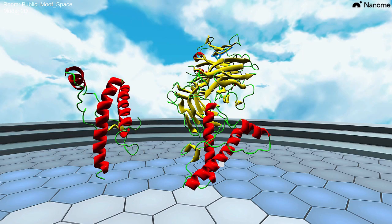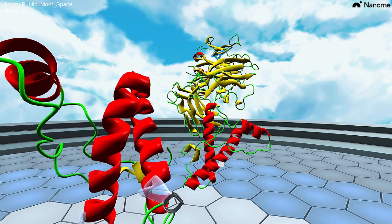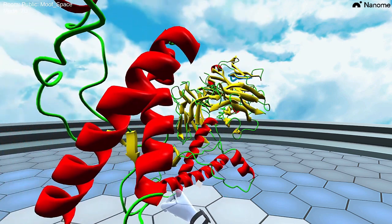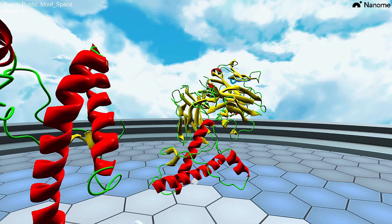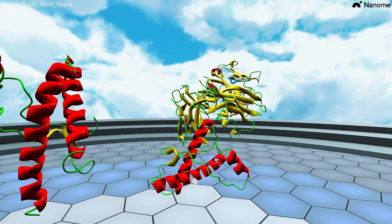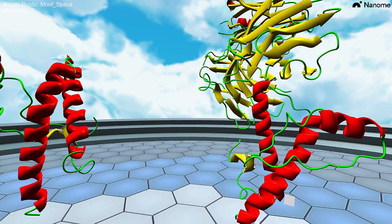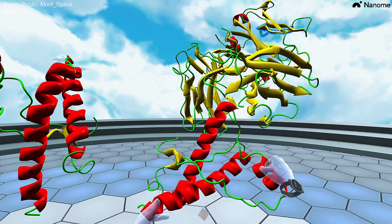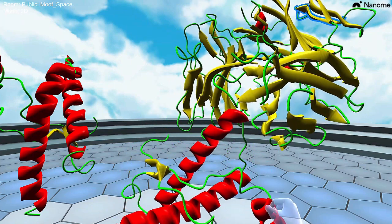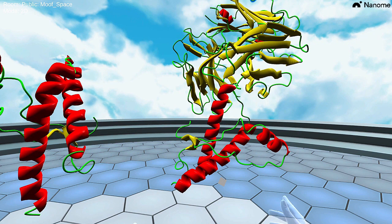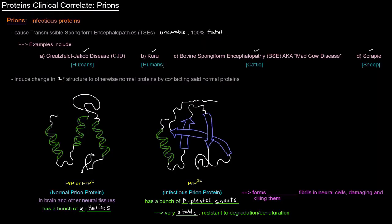Here's a quick 3D visual of the two different prion proteins. Over here to the left is the normal prion protein, PRP. And you can see the bulk of it is made up of alpha helices. The infectious prion protein, however, PRP^SC over here, you'll notice that the bulk of it is made up of beta-pleated sheets. So this thing is particularly stable because of those beta-pleated sheets. And that is really why it's a tremendous problem because it's so resistant to degradation.